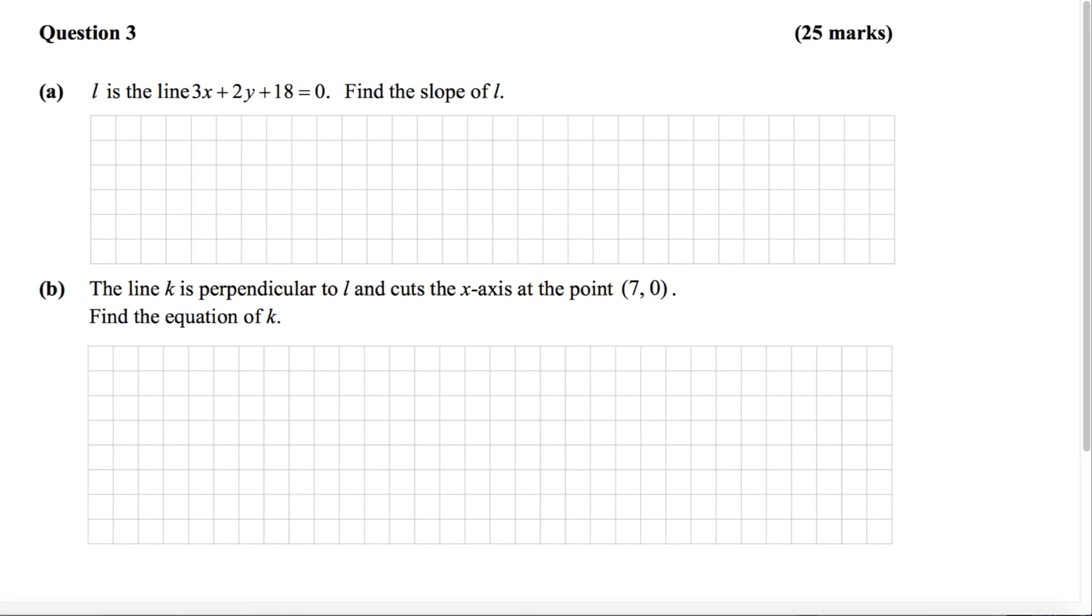This is the 2013 Leaving Certificate Ordinary Level Paper 2, and we're looking at question number 3. Part A says L is the line 3x plus 2y plus 18 equals 0, and you're asked to find the slope of L.